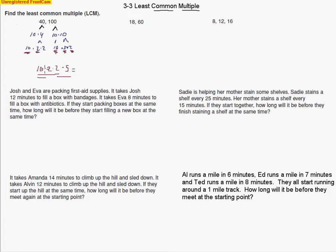Now we multiply those numbers together in groups: 2 times 5 is 10, times 10 is 100, times 2 is 200. So 200 is the least common multiple. Now for the next problem we'll look for a common factor before trying anything.